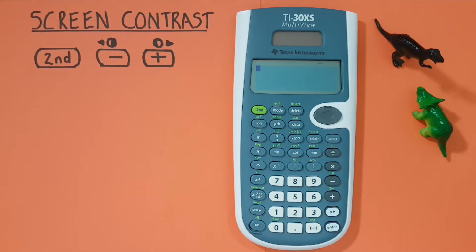The screen contrast is used to make your screen appear darker or lighter and easier to read.